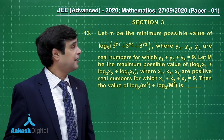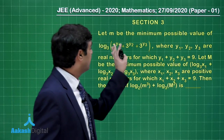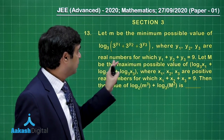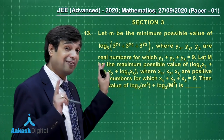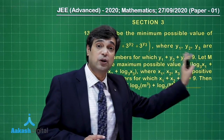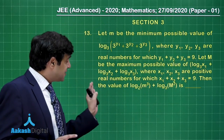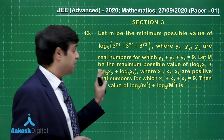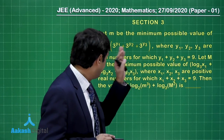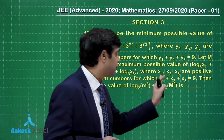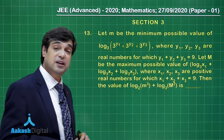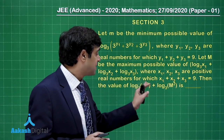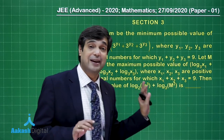Moving forward, let us take the next one, that is question number 13. Let small m be the minimum possible value for this term where y1, y2, y3 are real numbers such that their sum is equal to 9. At the same time, let capital M be the maximum possible value of the expression involving x1, x2, x3, which are positive real numbers with the constraint x1 plus x2 plus x3 equals 9. The value of log base 2 of m cubed plus log base 3 of M squared is to be found.